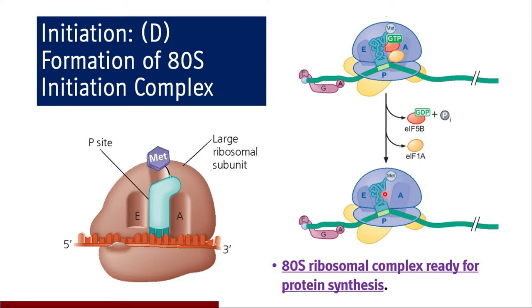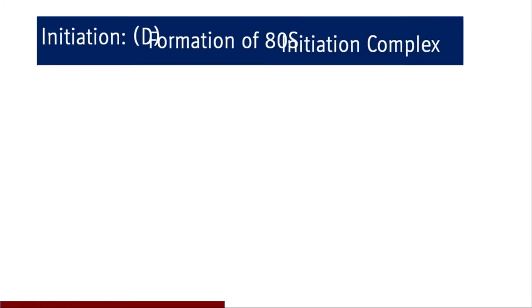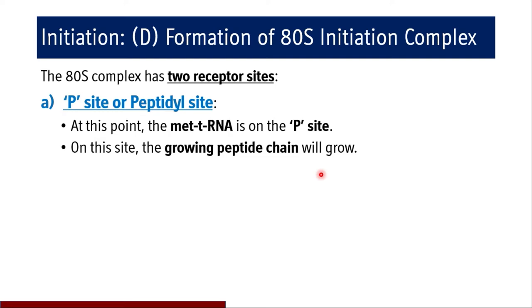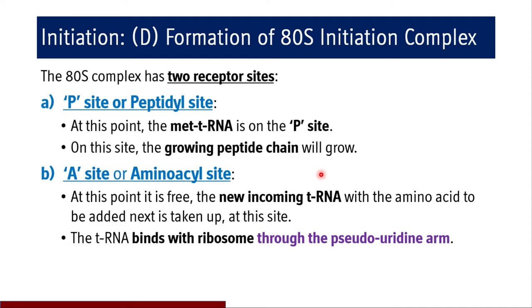The 80S ribosomal complex has two receptor sites — the P site (peptidyl site) and the A site (aminoacyl site). When the 80S complex is formed, one tRNA molecule with methionine is found at the P site, where the growing peptide chain will grow. The A site is free at this point — the new incoming tRNA with the amino acid to be added next is taken up at this site. The tRNA binds with the ribosome through the pseudouridine arm.